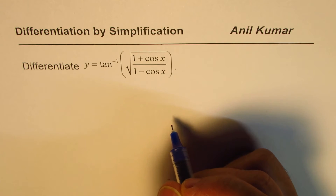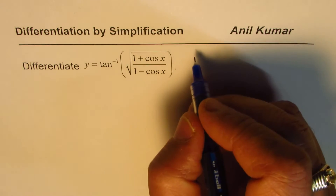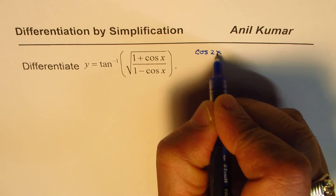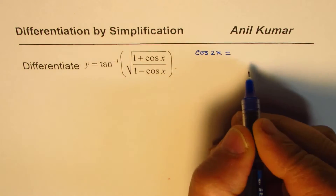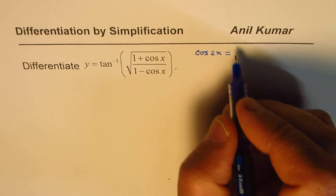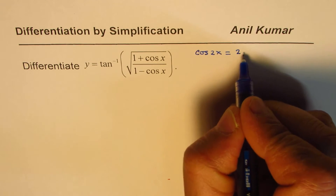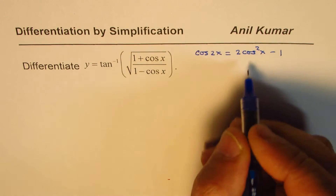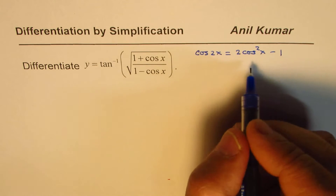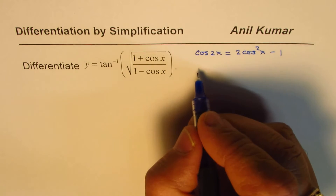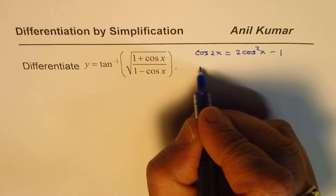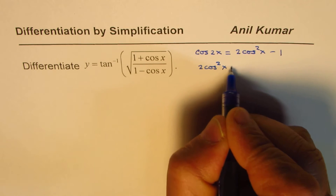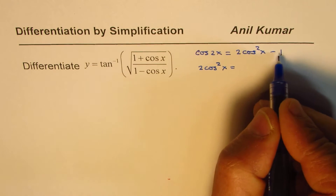I hope you remember that cos 2x can be written in different forms. We can write this as 2cos²x minus 1, and rearranging we get 2cos²x equals 1 plus cos 2x.